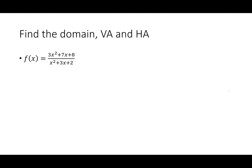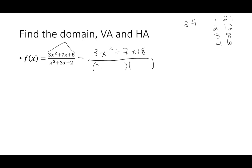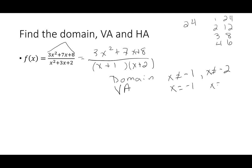For (3x²+7x+8)/(x²+3x+2): try to factor the numerator using the AC method — 3×8=24, looking for factors of 24 that sum to 7: 1&24, 2&12, 3&8, 4&6 — none add to 7, so the top doesn't factor. Leave it as 3x²+7x+8. The denominator factors as (x+1)(x+2). Domain: x cannot be -1 or -2, giving vertical asymptotes at x=-1 and x=-2. For the horizontal asymptote: 3x² over x² gives y=3.